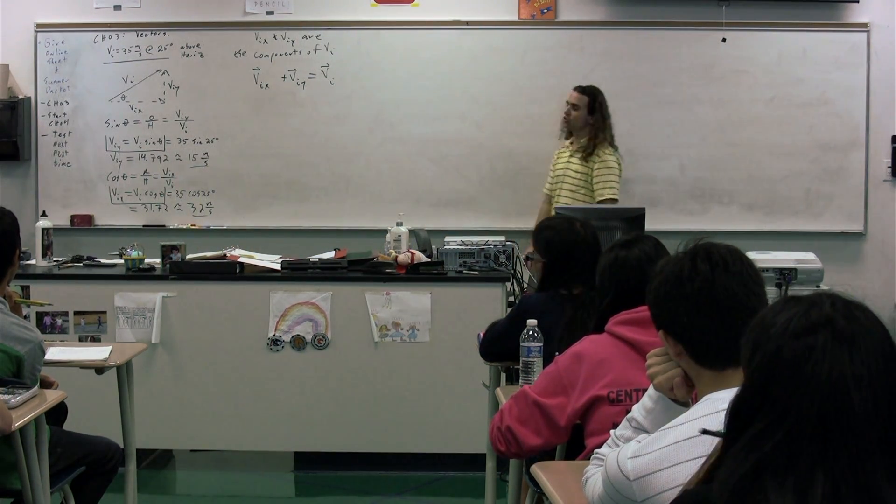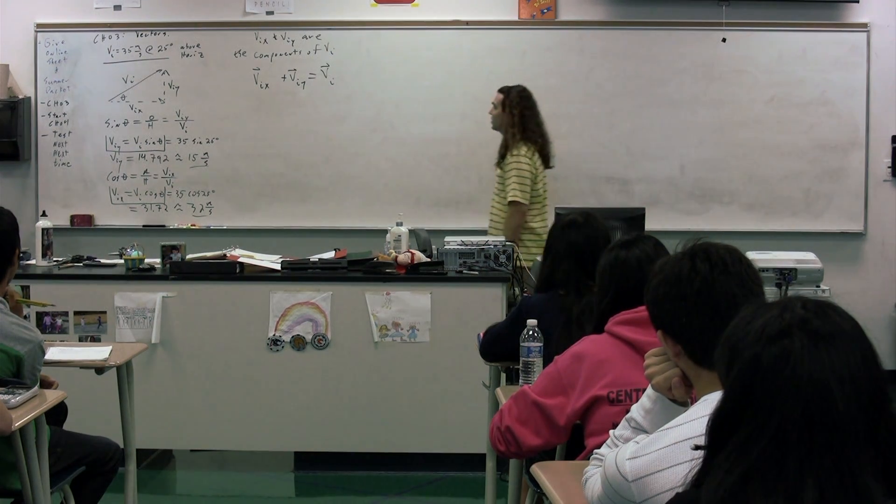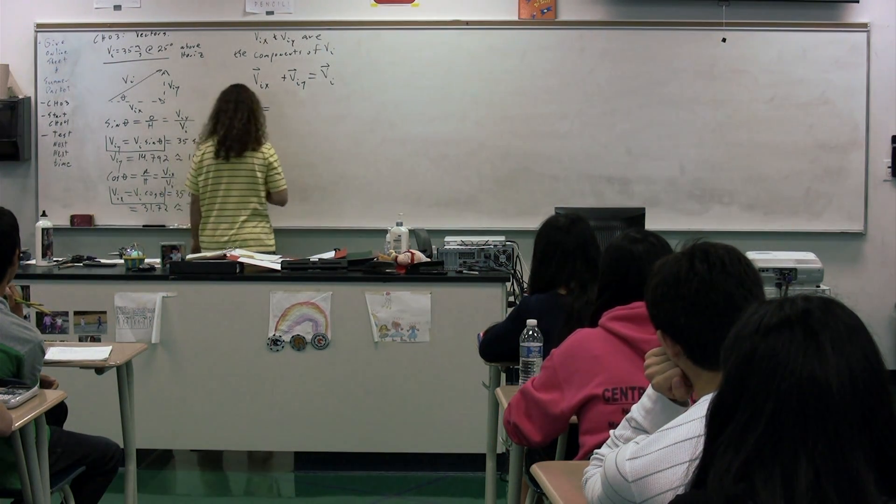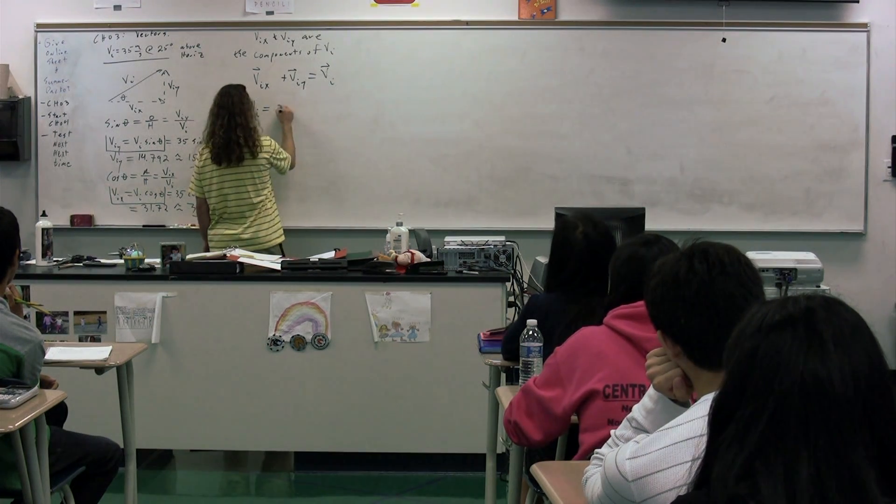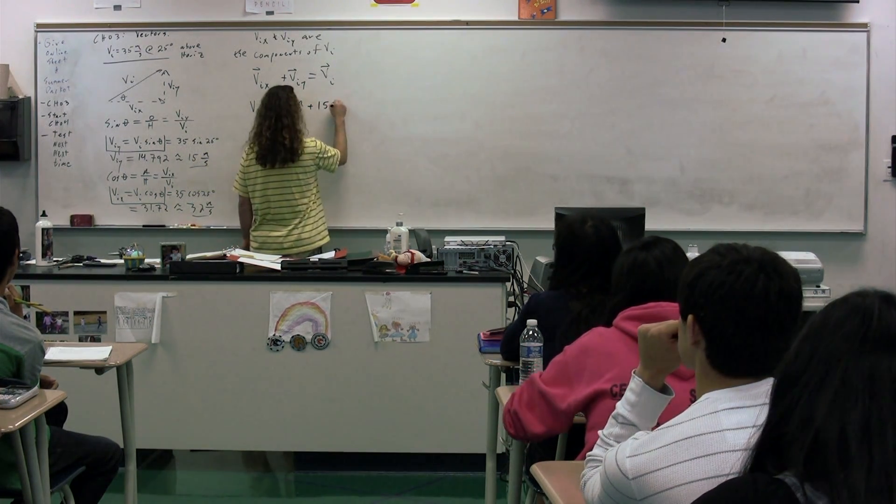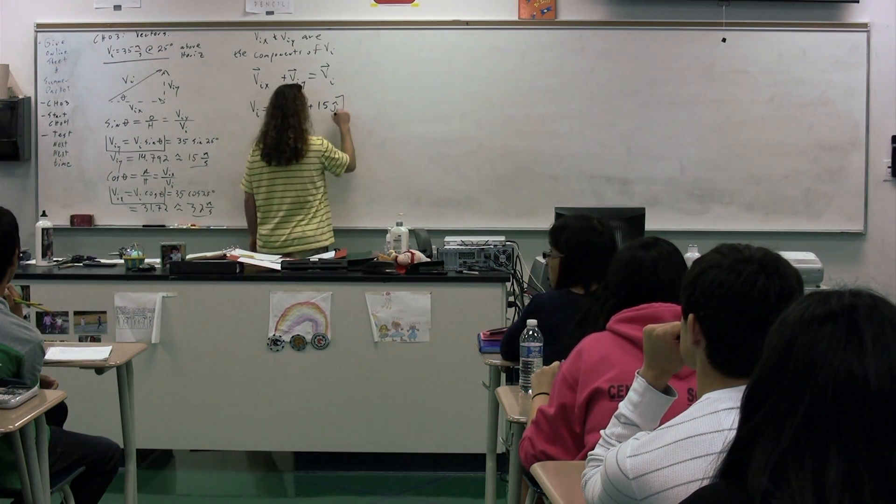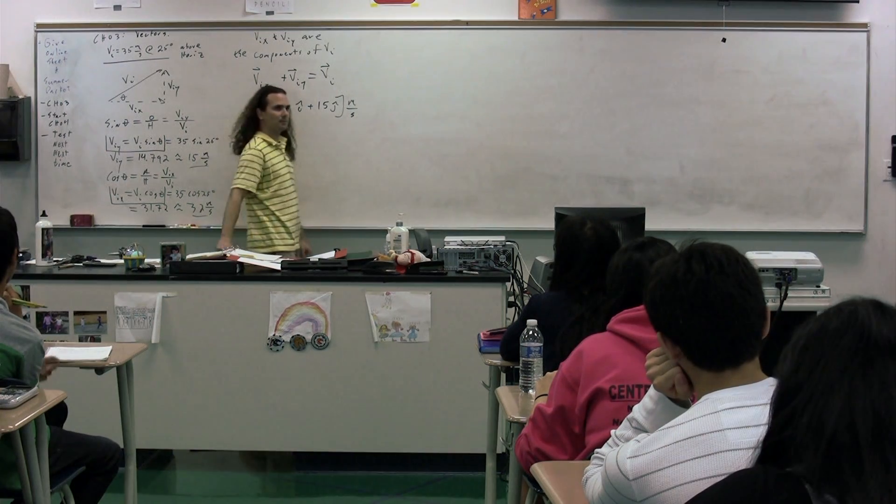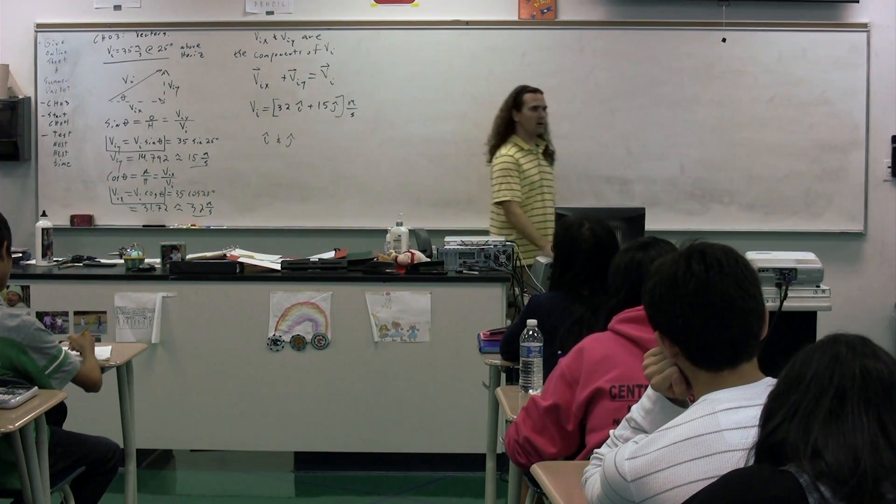Now, another way that we can draw out this initial velocity vector is to say this initial velocity vector is equal to 32i plus 15j meters per second, using i and j. i and j, Maria, are?